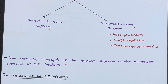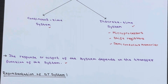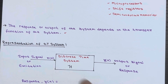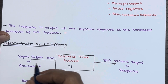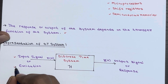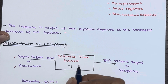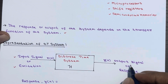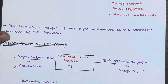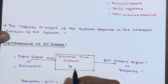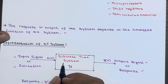Now let's understand the representation of a discrete time system. A discrete time system is essentially a collection of interconnected elements that operate on a discrete time signal known as the input signal or excitation, based on a well-defined algorithm. This operation produces another discrete time signal known as the output signal or response of the system. Here, H denotes the transformation, also called the operator.